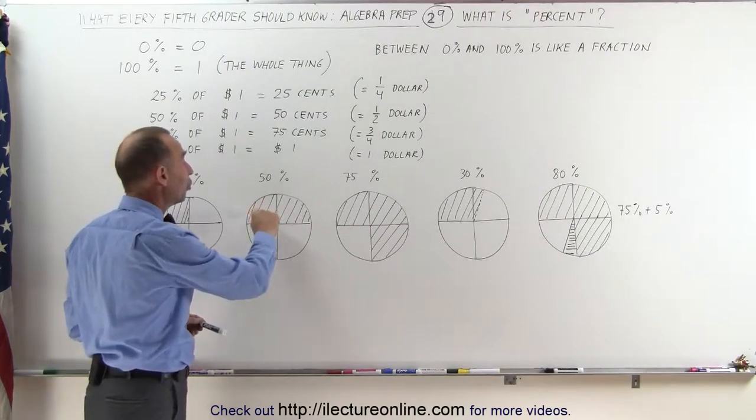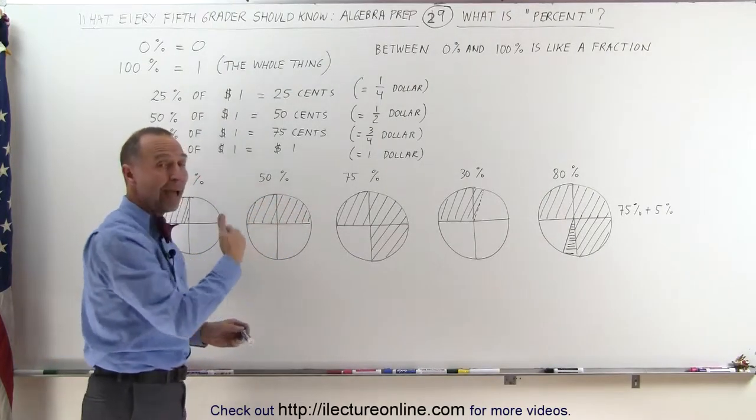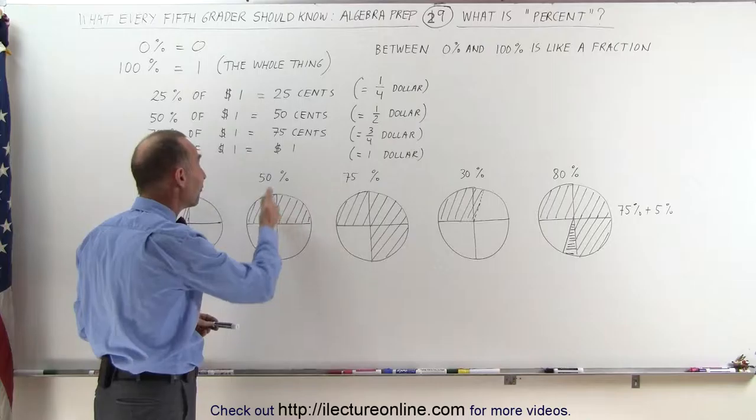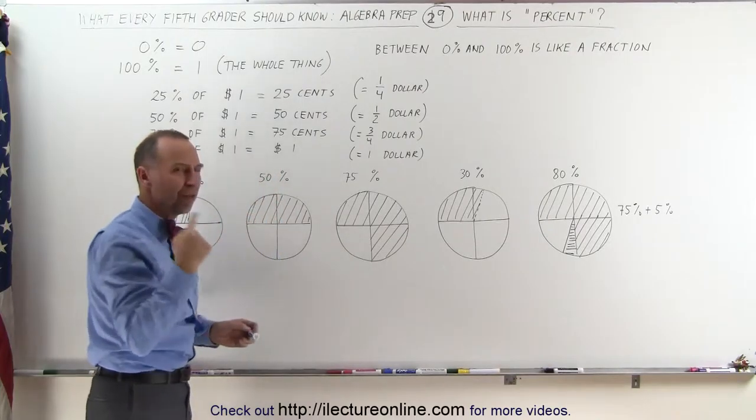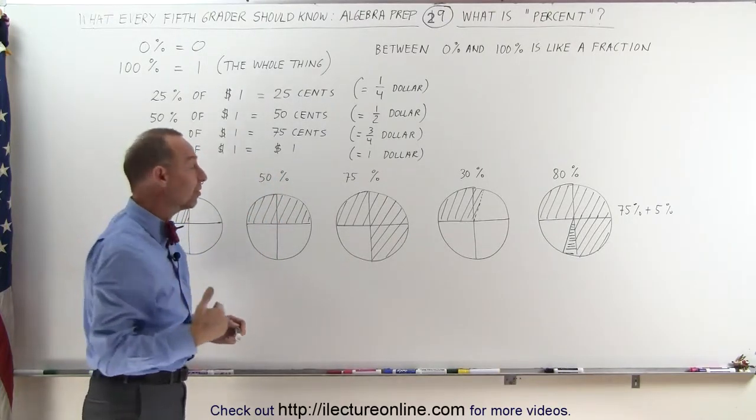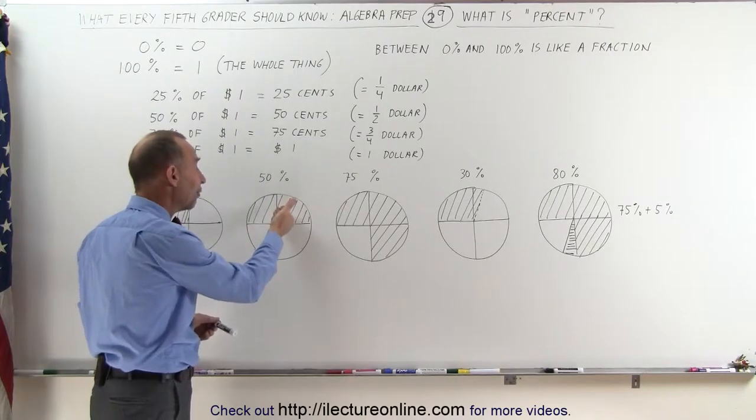50% means I have two of these quarters. Two quarters add up to a half. And a half means I have 50% because 50% is half of 100%. Therefore, I have the half of the whole thing.